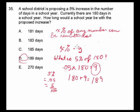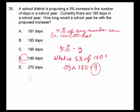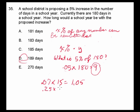x% of a number is written as the percentage times that number. For example, what is 7% of 15? We rewrite 7% as 0.07 times 15, multiply that out, and we get 1.05. What is 25% of 65? That gives us 16.25.